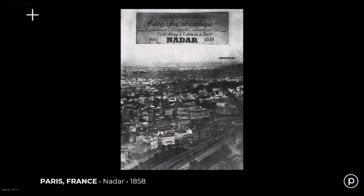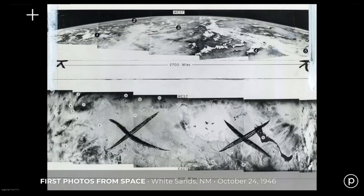And in many ways, the prevalence of nadir views is an anomaly. The first decades of aerial photography — such as this 1858 view from a balloon of Paris — and later imagery from kites and aircraft were all taken at an angle.